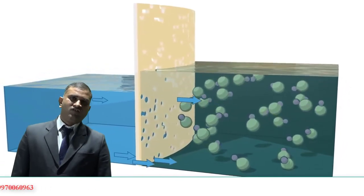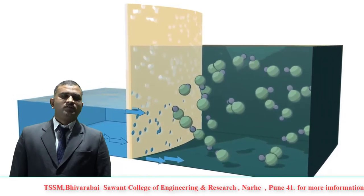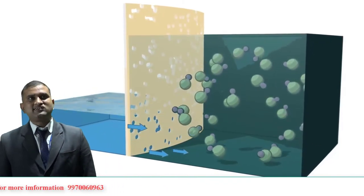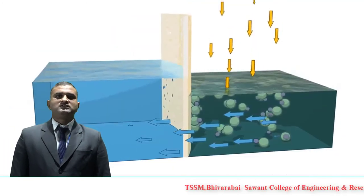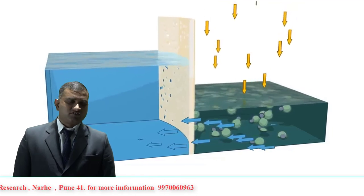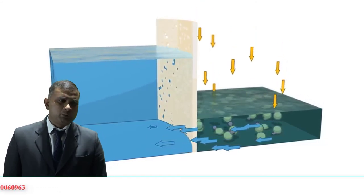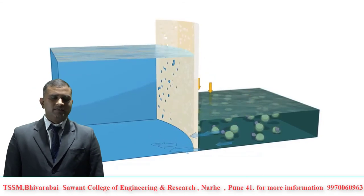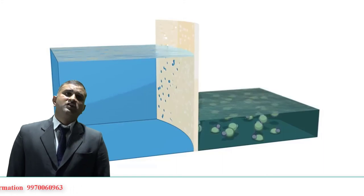Osmosis is a process where a weaker saline solution will tend to migrate to a stronger saline solution — that is, a solution that is less concentrated will have a natural tendency to migrate to a solution with a higher concentration. Reverse osmosis is the process of osmosis in reverse: you push the water through the reverse osmosis membrane by applying pressure in order to desalinate, demineralize, or deionize the water, allowing pure water to pass through while holding back the contaminants. This is the reverse osmosis process.